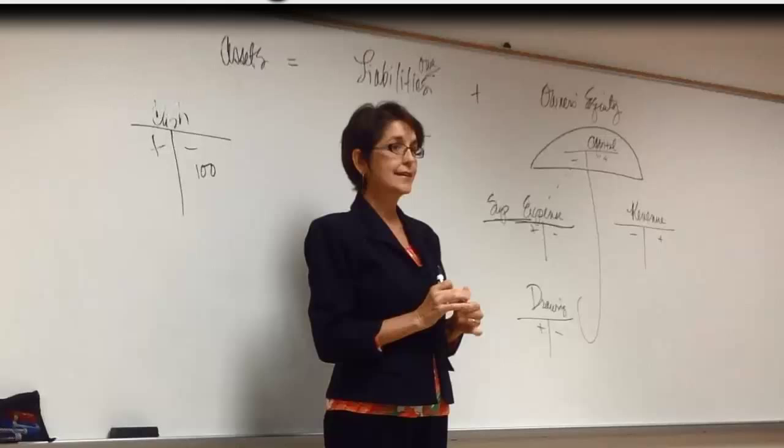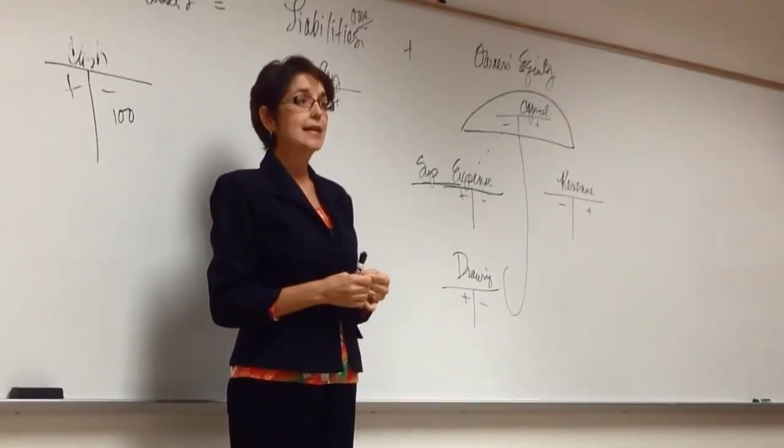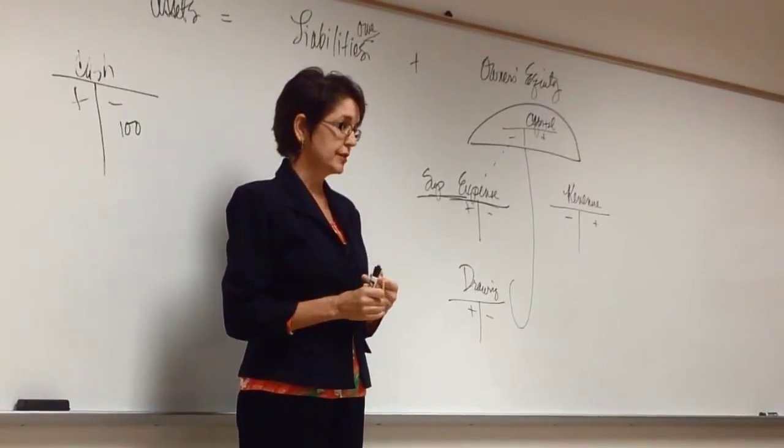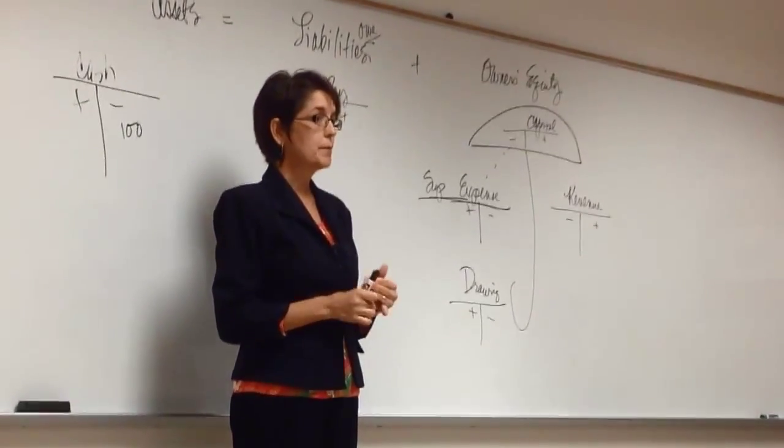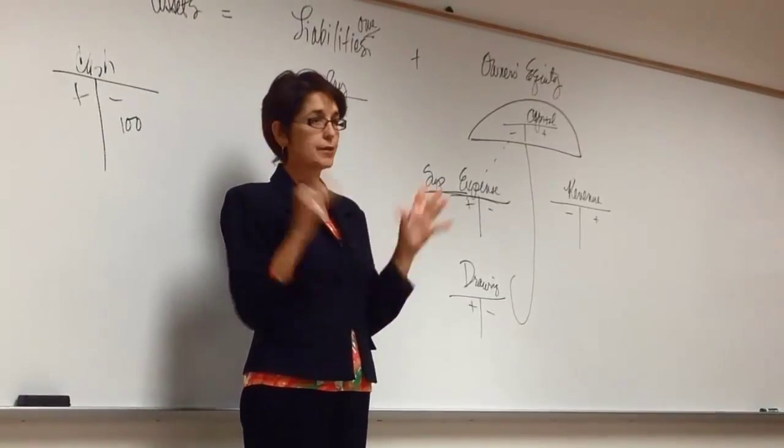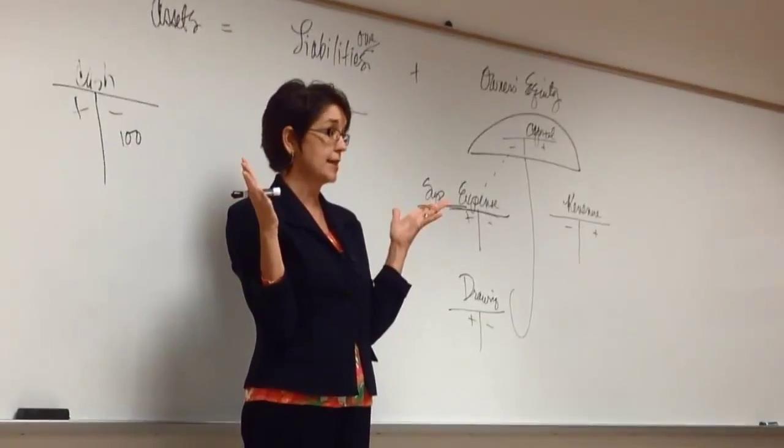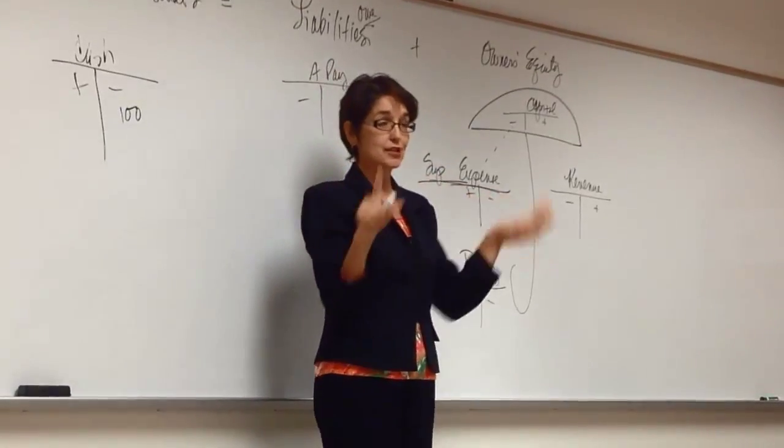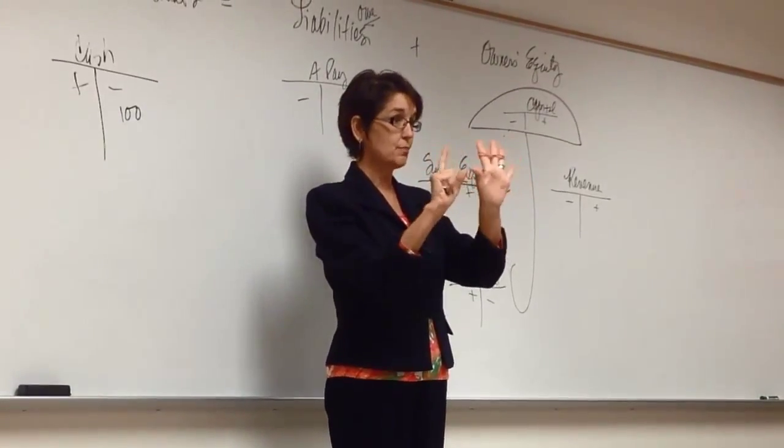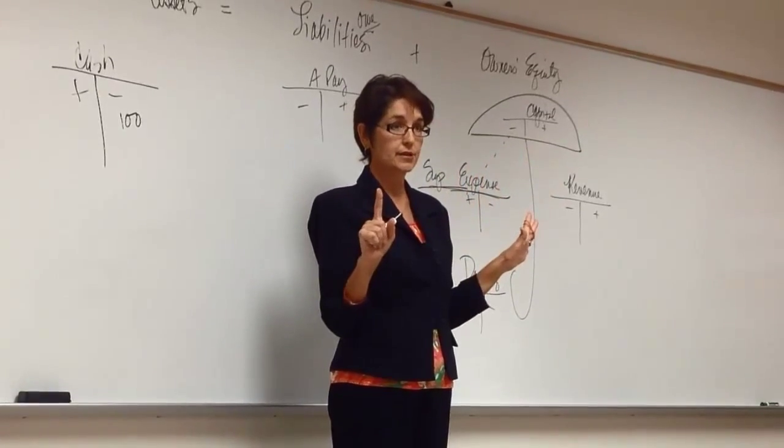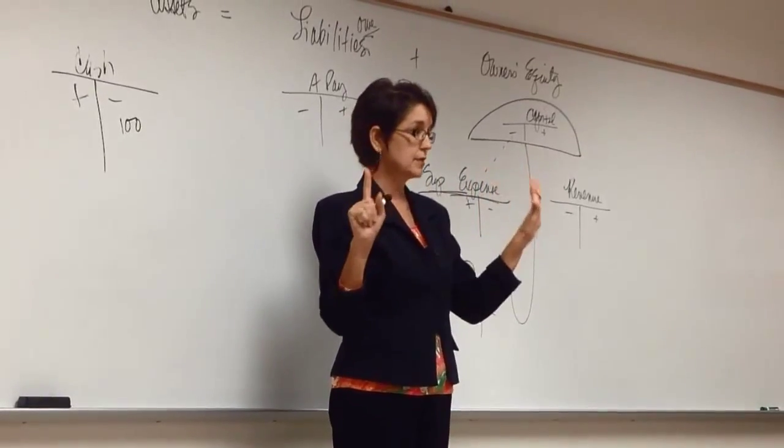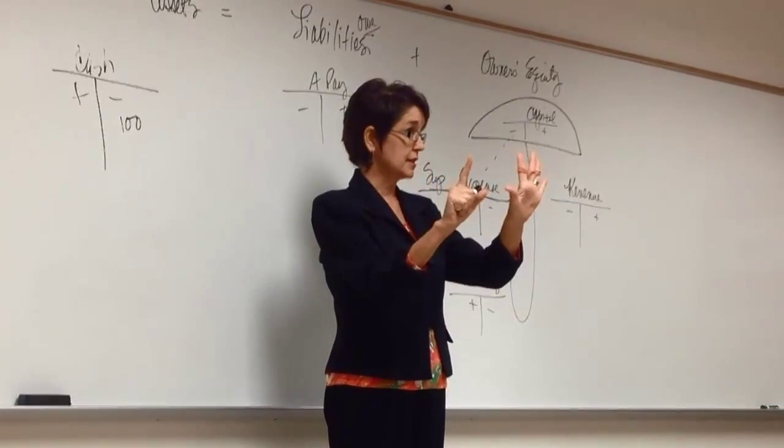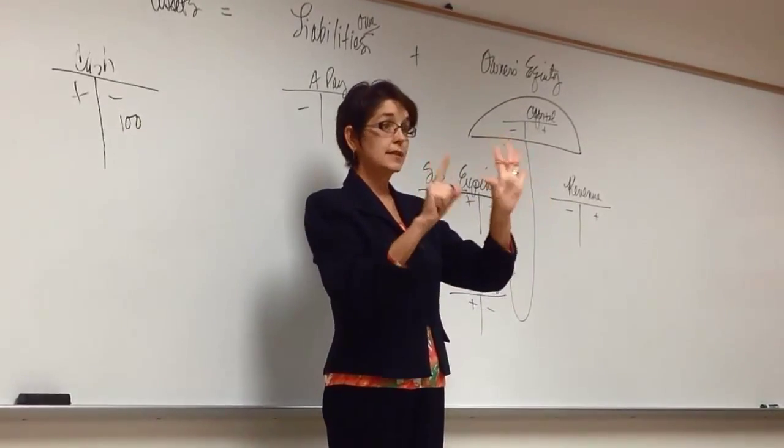Any questions? Our second adjusting entry that we're looking at today is going to involve prepaid insurance. Up to this point, when we purchased an insurance policy, and I'm just going to be using numbers that I can work with easily up here without thinking. But let's say we purchased a six-month insurance policy for $600. Everybody got what I just said? How long was our policy for? Six months. And how much did it originally cost me? $600.